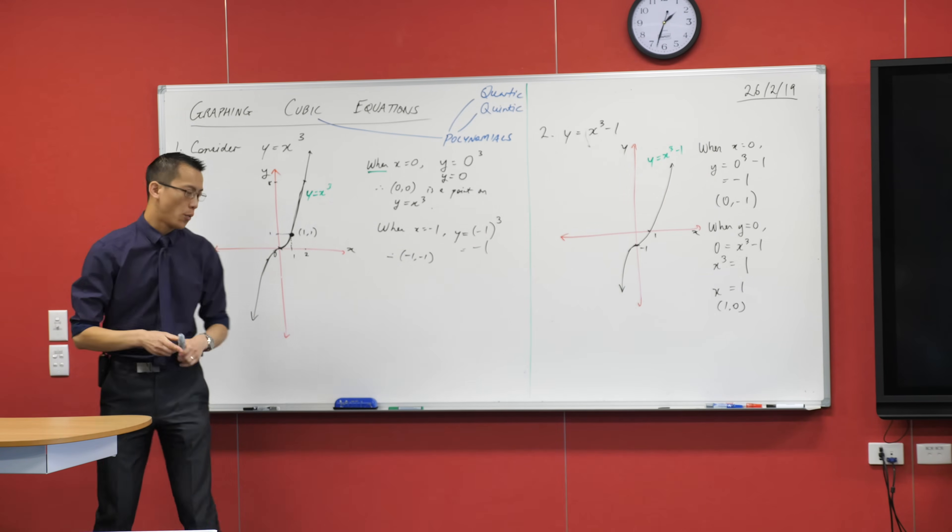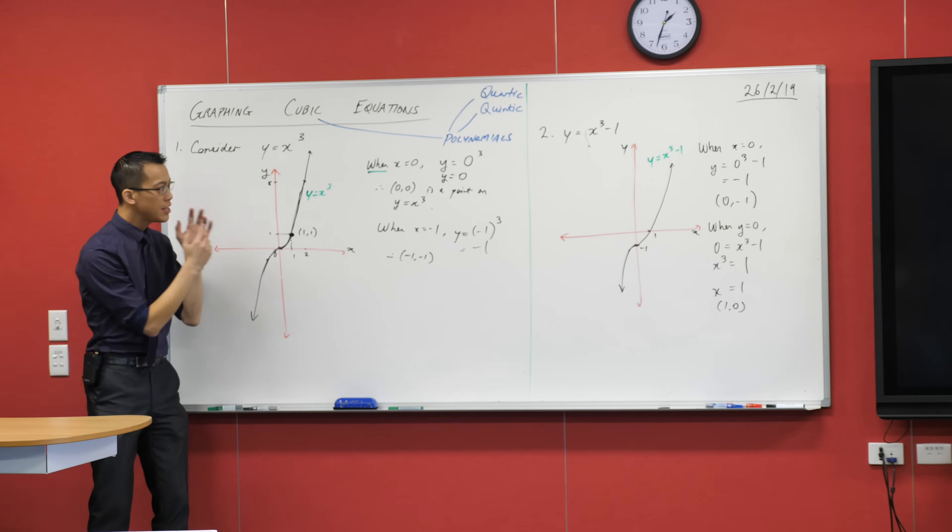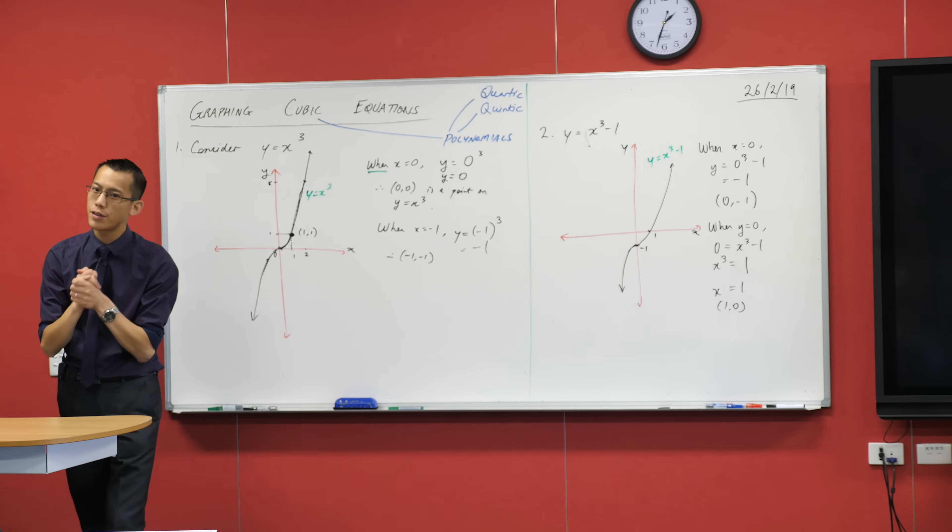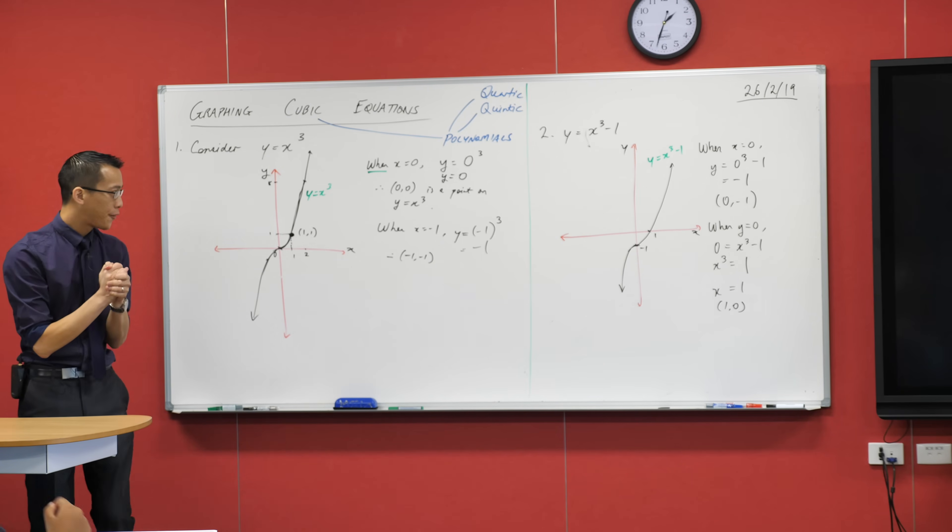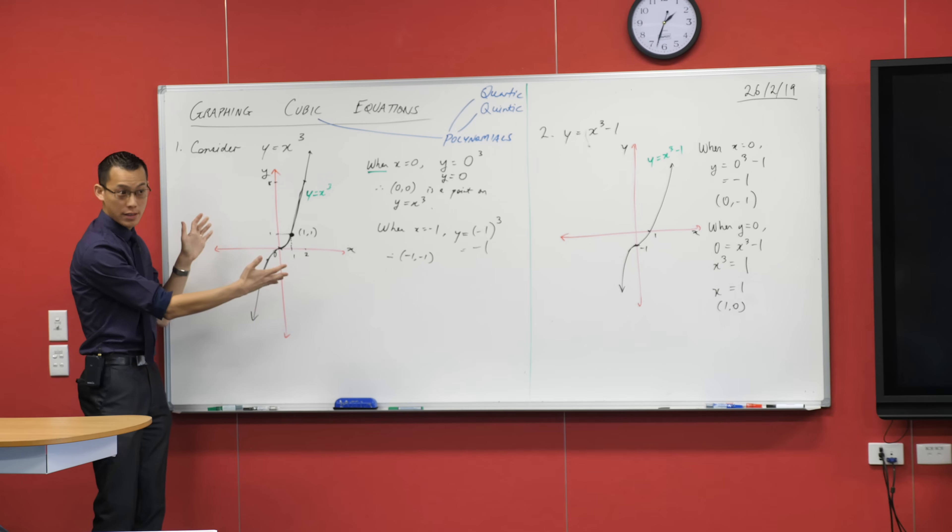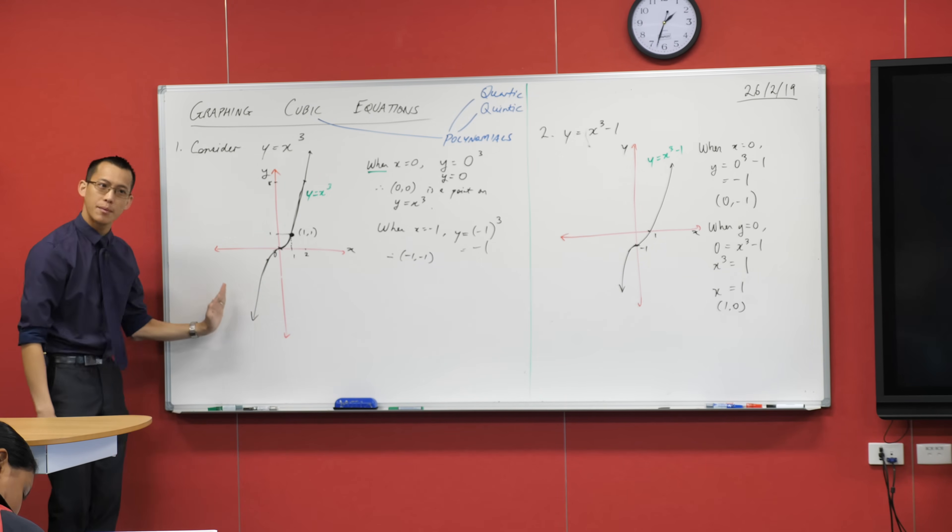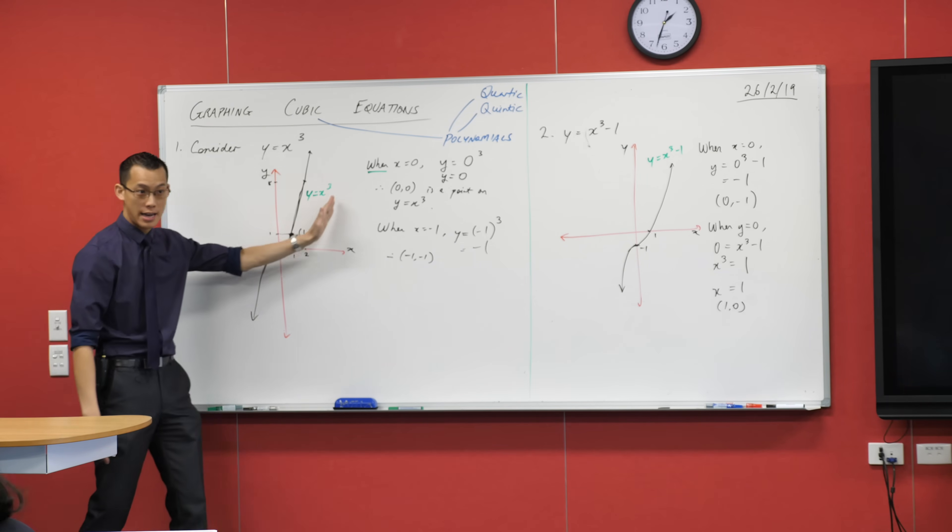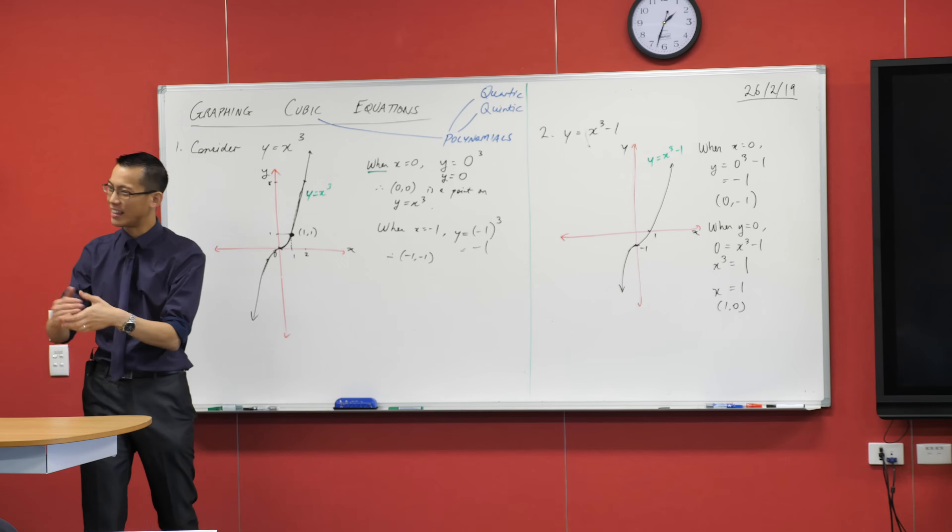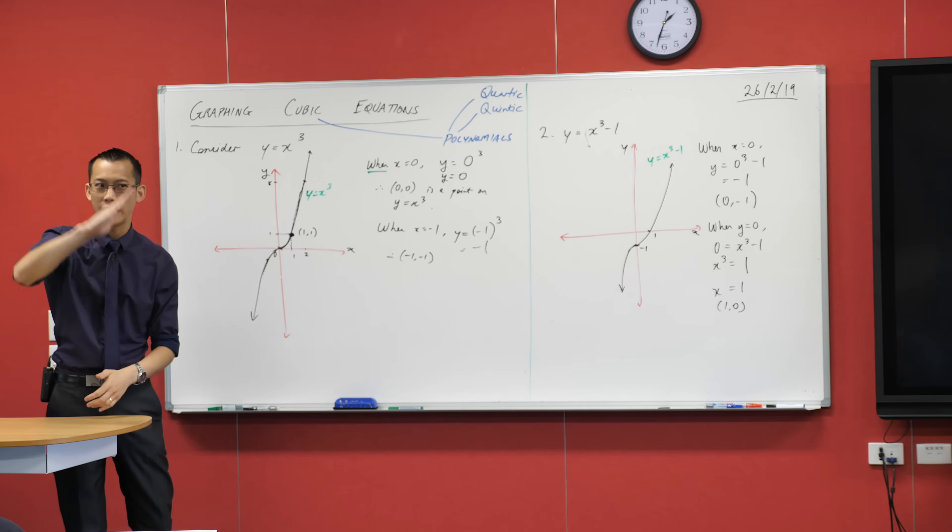Now, just before we leave off this, these graphs are okay. There's a few things to point out. The first one is, do you notice for both of these and for all of the graphs that we're looking at, the graph kind of is steep in some points and it's shallow at others. Like the gradient of our line, it changes. So that's different to our linear graphs where it's just always the same gradient everywhere.